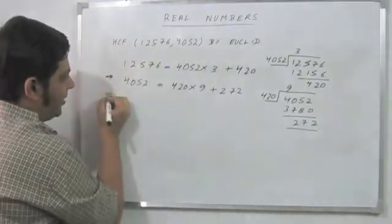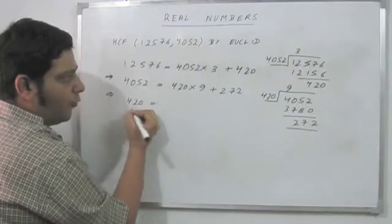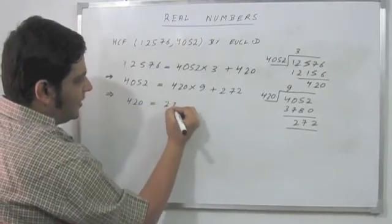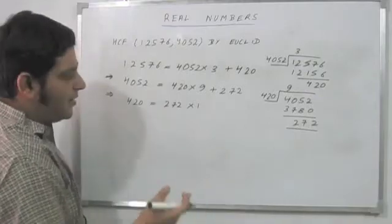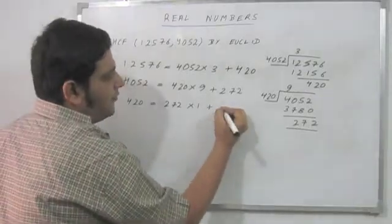Again, the remainder is not 0, so I need to apply it on 420 and 272. It will definitely go just once and my remainder is going to be 148.